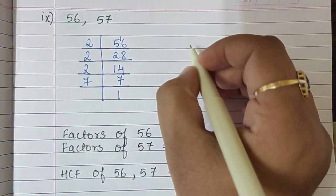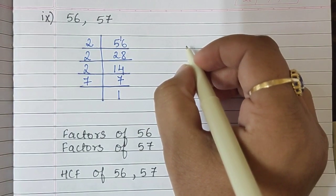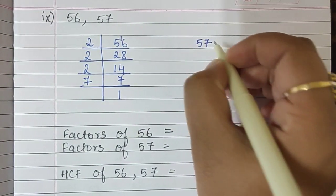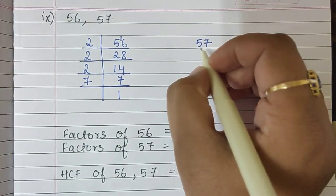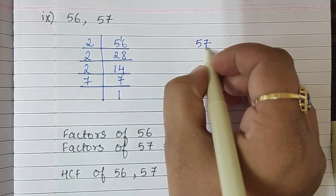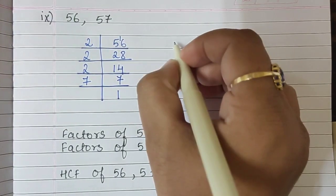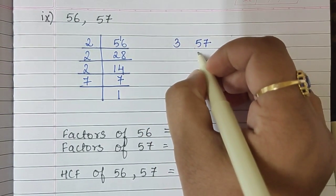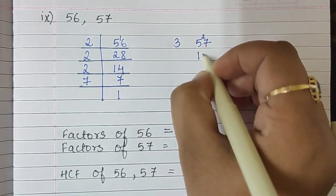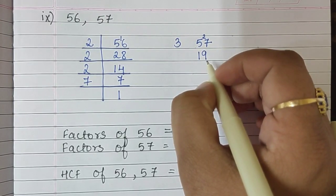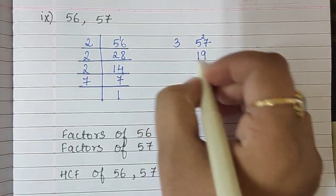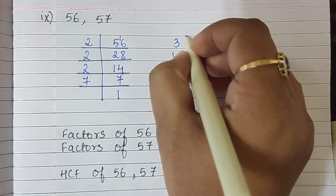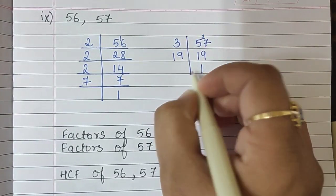Now we find the factors of 57. 57 is divisible by 3, so we write 3. 3 nineteens are 57. And 19 is a prime number, so we write 19 ones are 19.